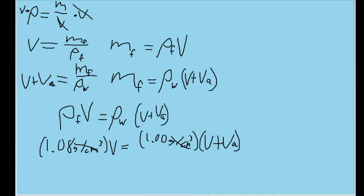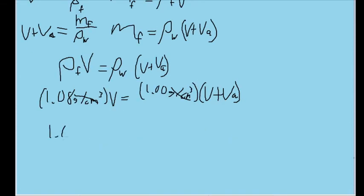And also, because we've done that, now we have this effectively dimensionless one here, since the density of water is just one. We can have this number completely disappear, since multiplying by one doesn't change anything. In other words, our equation has now become 1.08v equals v plus v sub a.